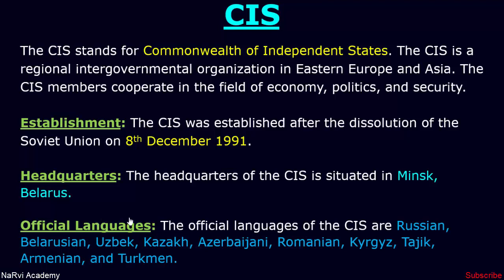The official languages of the CIS are Russian, Belarusian, Uzbek, Kazakh, Azerbaijani, Romanian, Kyrgyz, Tajik, Armenian and Turkmen.